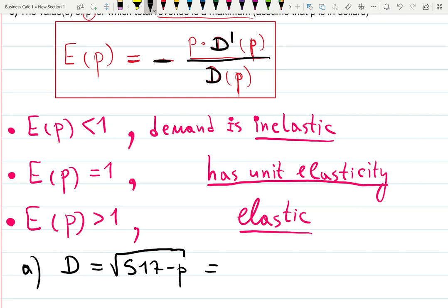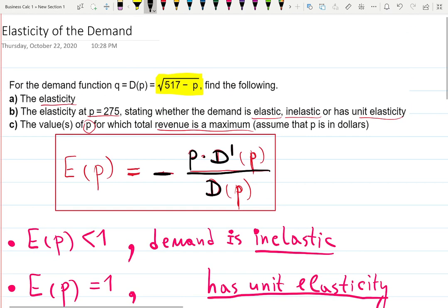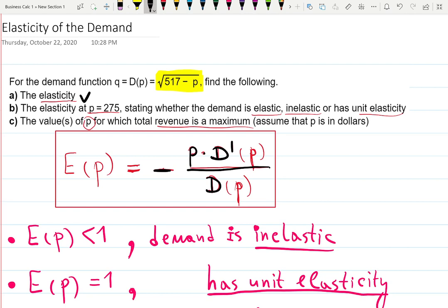If E(p) is less than 1, demand is inelastic. If it equals 1, it has unit elasticity. If E(p) is greater than 1, then it is elastic. That's what you need to know for this topic.